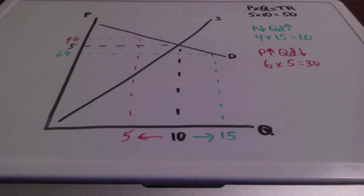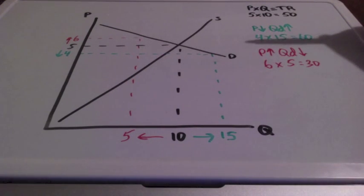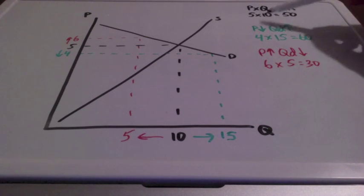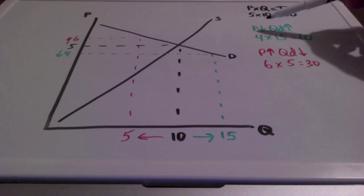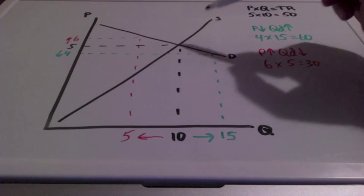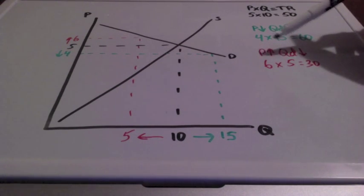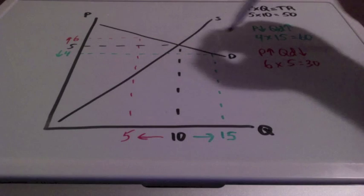So what can we conclude about total revenue and elastic demand? Total revenue will increase when prices go down if demand is elastic, and total revenue will decrease when prices go up if demand is elastic.